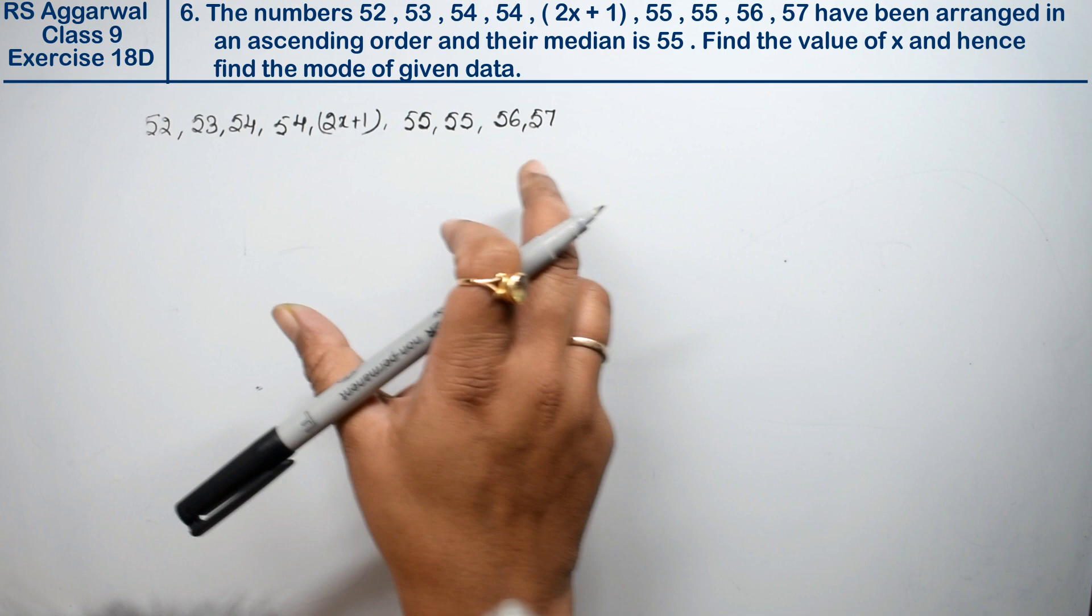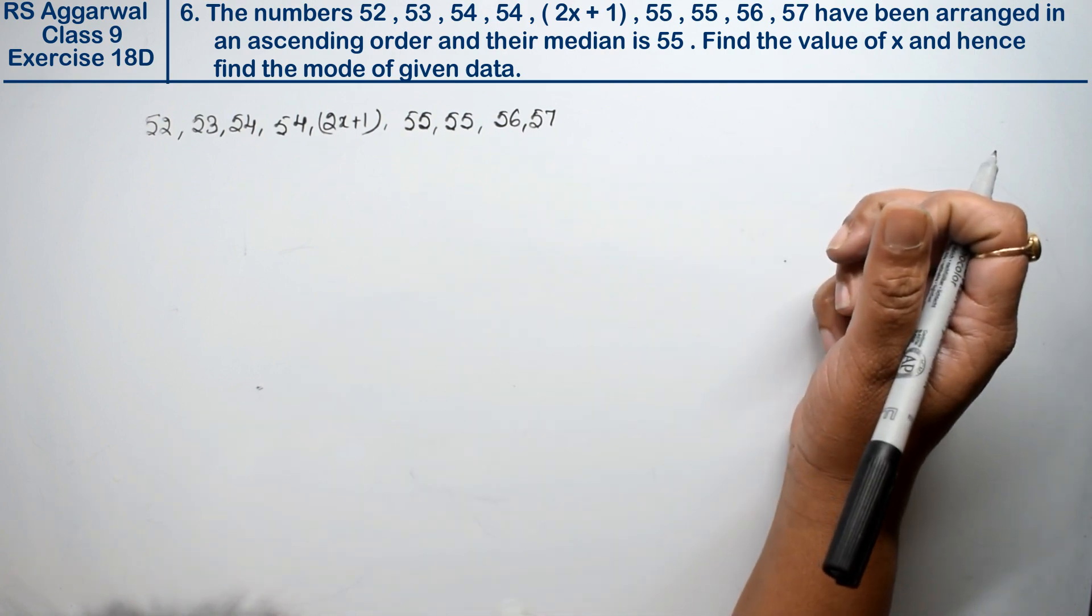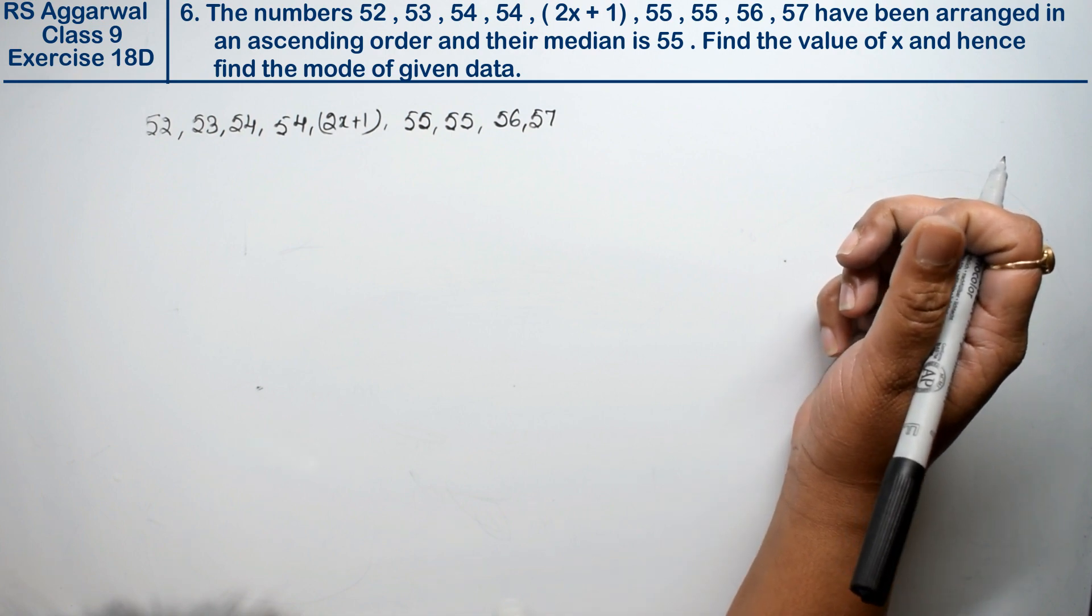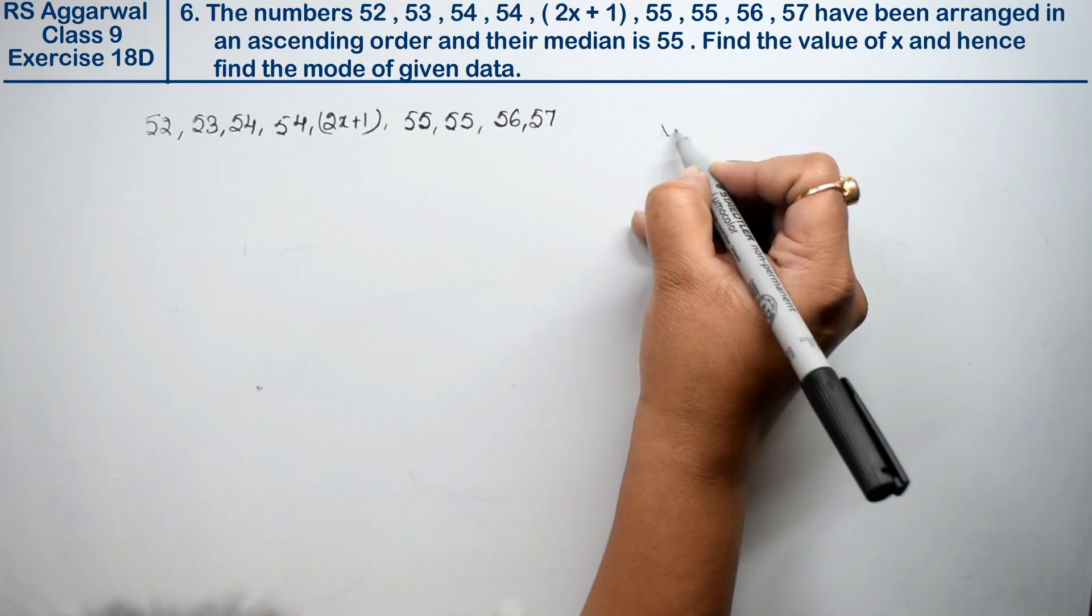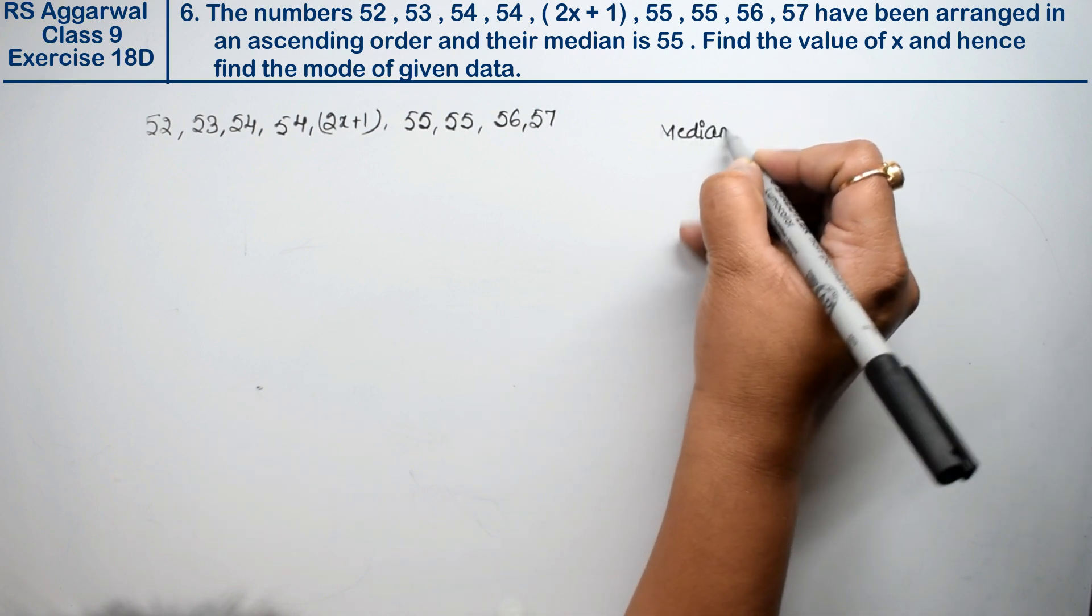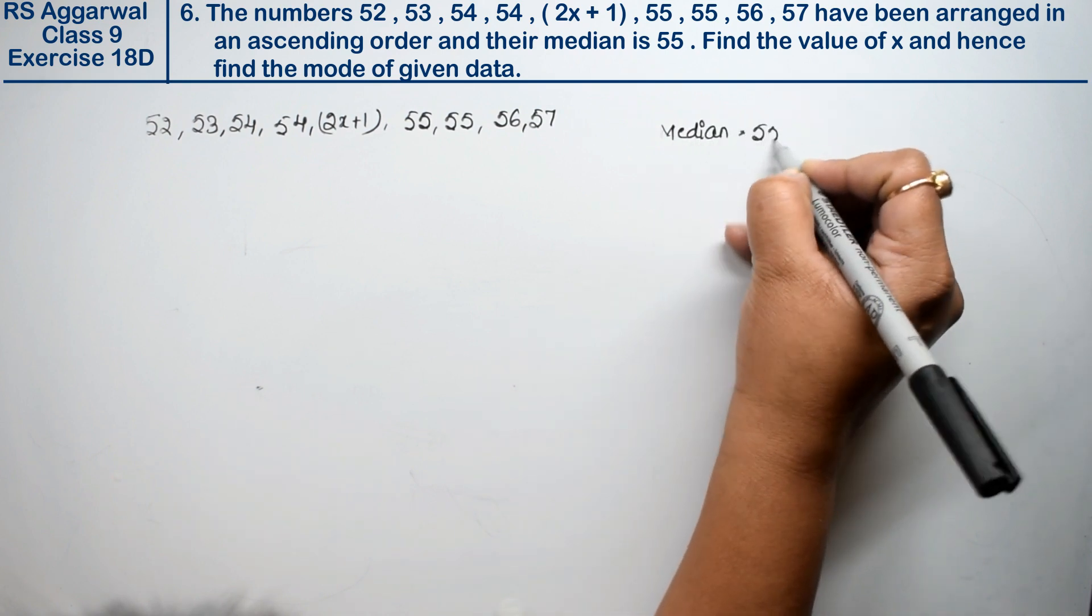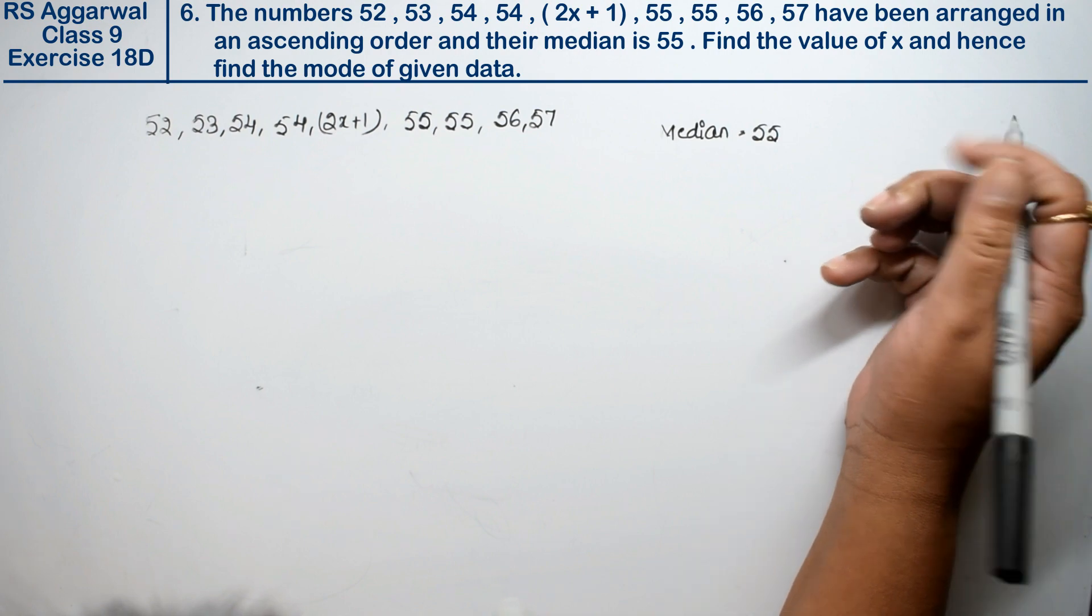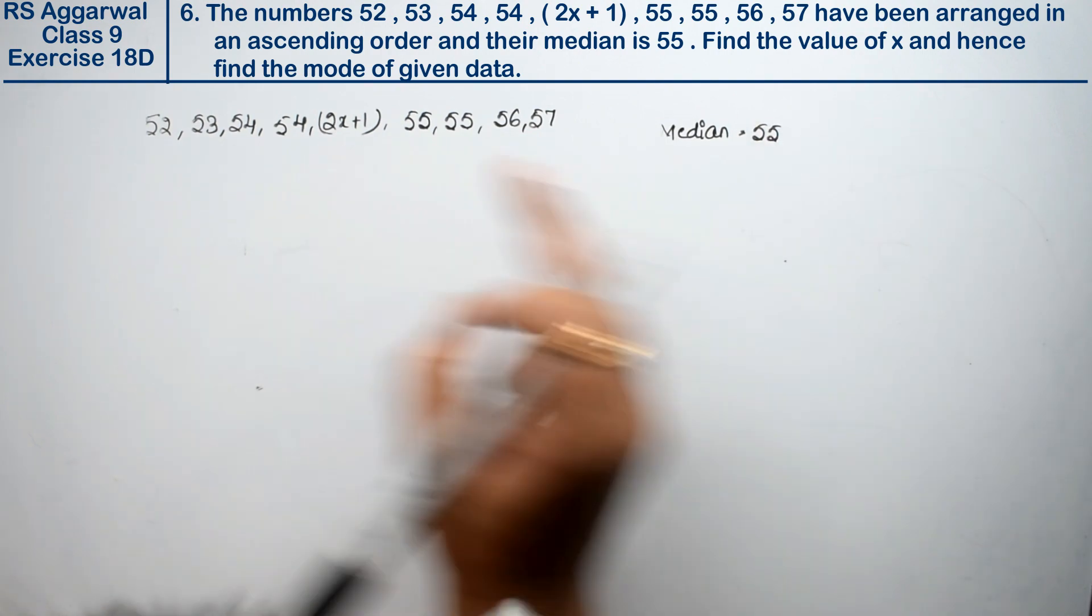The numbers have been arranged in an ascending order and their median is 55. Find the value of x and find the mode of the given data.